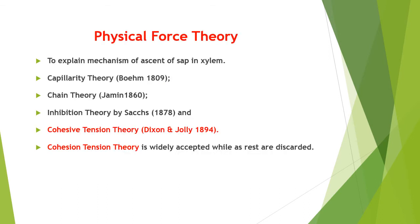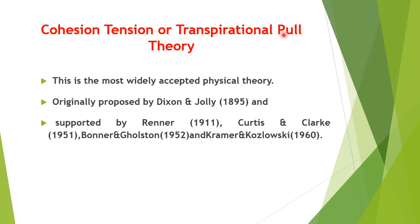To explain the physical force mechanism for ascent of sap in xylem, different physical force theories were given: capillary theory, chain theory, imbibition theory, and the cohesion-tension theory by Dixon and Jolly in 1894. The Dixon and Jolly cohesion-tension theory is widely accepted while the rest are discarded. This theory is also called the transpirational pull theory.